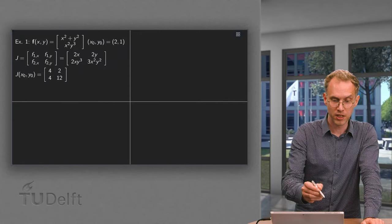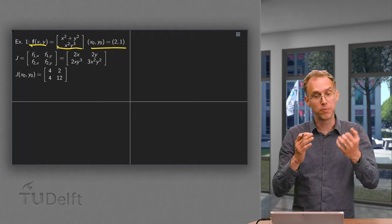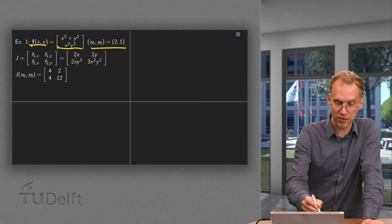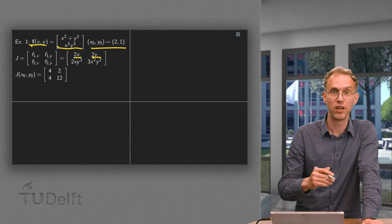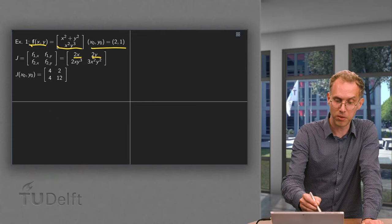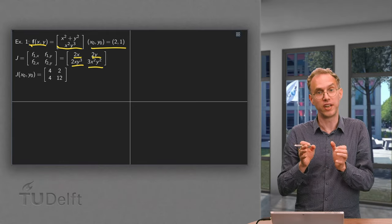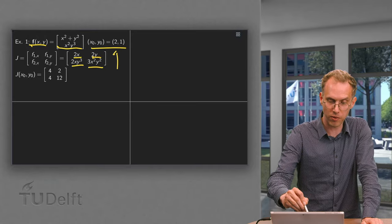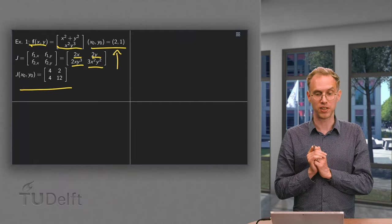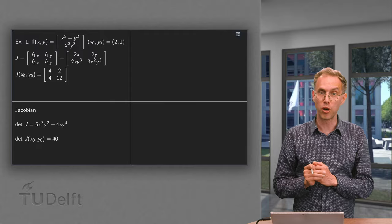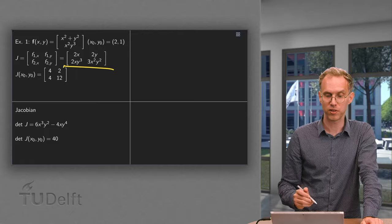Let us do a small example. We have a particular f and a specific point. First we compute the general Jacobi matrix, which contains the partial derivatives of the first component with respect to x and y in the first row, and the partial derivatives of the second component with respect to x and y in the second row. We can then evaluate it at the point (x₀, y₀) by plugging in x equals 2 and y equals 1.